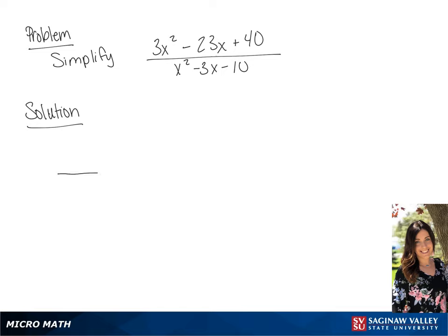We are going to factor the numerator. We will get 3x minus 8 times x minus 5.